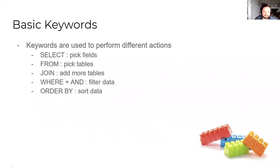Basic keywords: keywords are what you use to talk to the data. For picking fields you're going to use SELECT. FROM is when you're picking the table. Joining lets you add more than one table together so you can select from multiple tables at once. You'll use WHERE and AND to filter your data — if you want to narrow it down to a certain branch or item type, that kind of thing. And ORDER BY is used for sorting data. There's a lot more keywords, but to get started these are what you need to write a basic report.